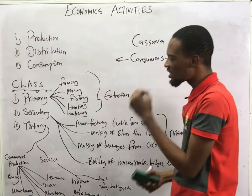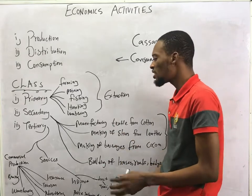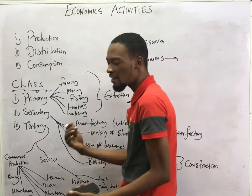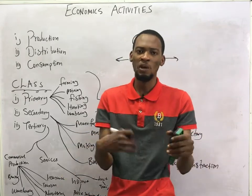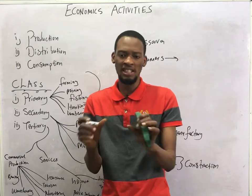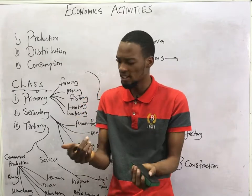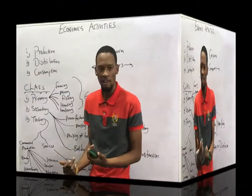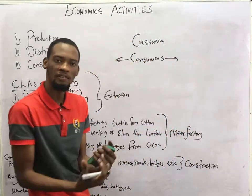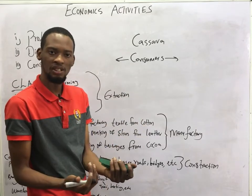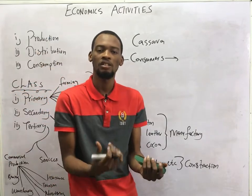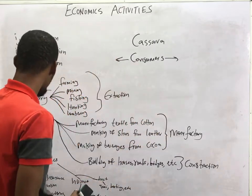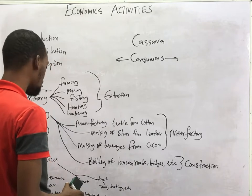Tertiary economic activities are divided into commercial production and services. Services are rendered — in economics, we have goods and we have services. Services are not really tangible; they are rendered. For example, teaching is rendering a service, a taxi driver renders a service, or hiring a cleaner to clean your house. So services are under tertiary activities, along with commercial production.